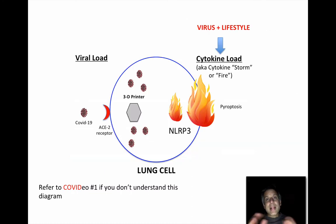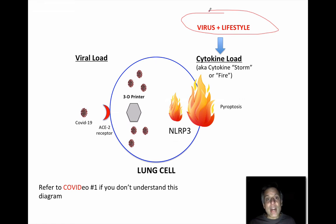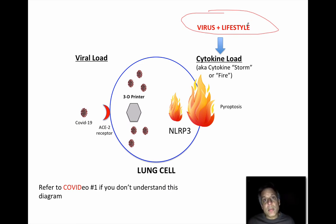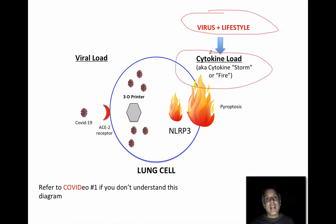Coming back to the diagram from co-video-1, this is really what we're trying to accomplish: we want to minimize the cytokine load to our body. If we're exposed to a virus, that virus is already going to cause a surge in cytokines. But if our lifestyle, emotions, diet, and physical activity levels are also contributing to even more cytokine release, then that load is going to be too great for us to bear — and that's when we can have chronic health complications.